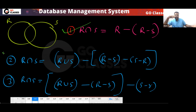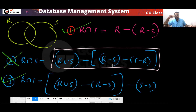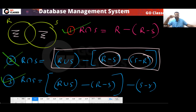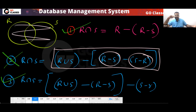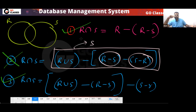You can notice: the first is correct and the second is wrong. What does the second expression give you? Remember, R minus S and S minus R are disjoint sets. From R union S, if you remove R minus S, you get S. So the second expression actually gives you S, not R intersection S.